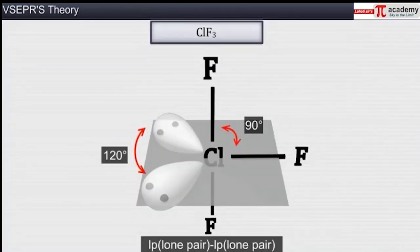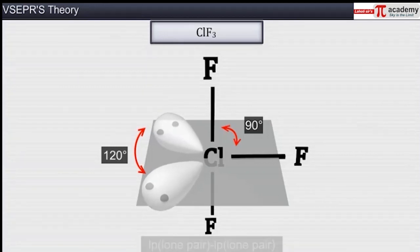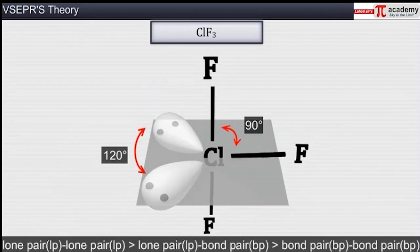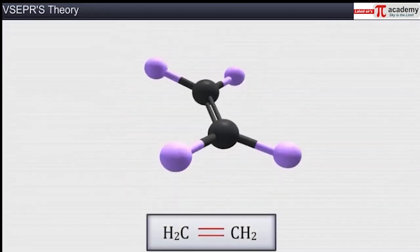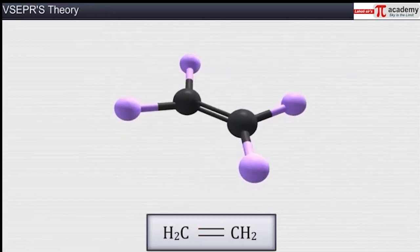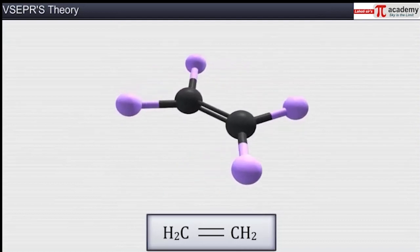In a molecule, the repulsion between lone pairs of electrons is always maximum. We can see that the repulsion between two lone pairs is more than that between a lone pair and a bond pair, which is greater than that between two bonded pairs. Additionally, a multiple bond should be assumed to be a single electron pair; therefore, the presence of multiple bonds will not affect the shape of a molecule.